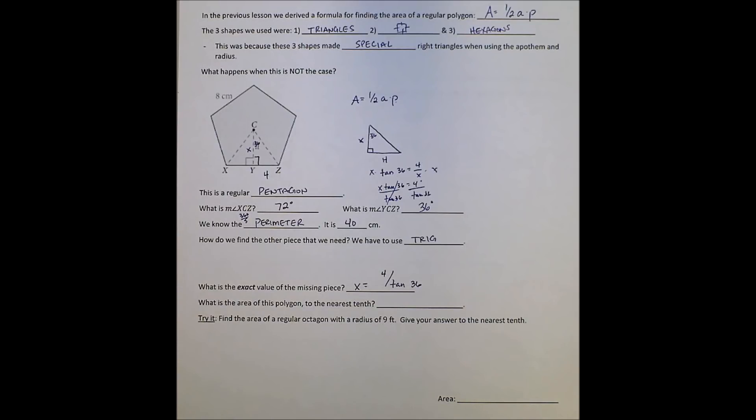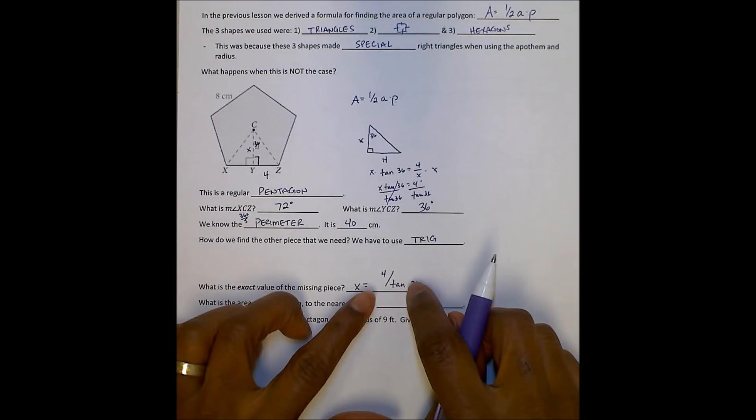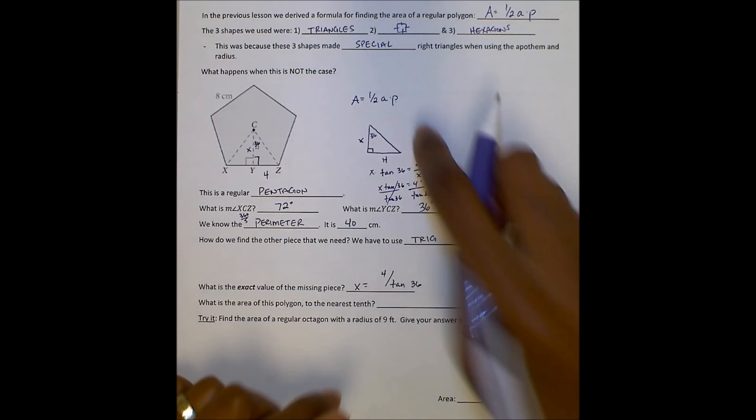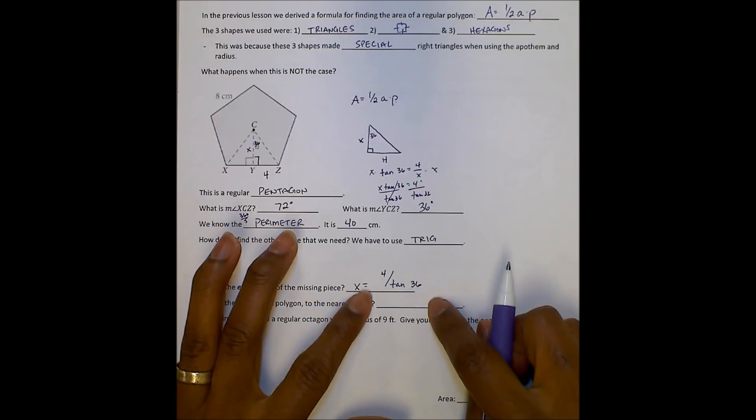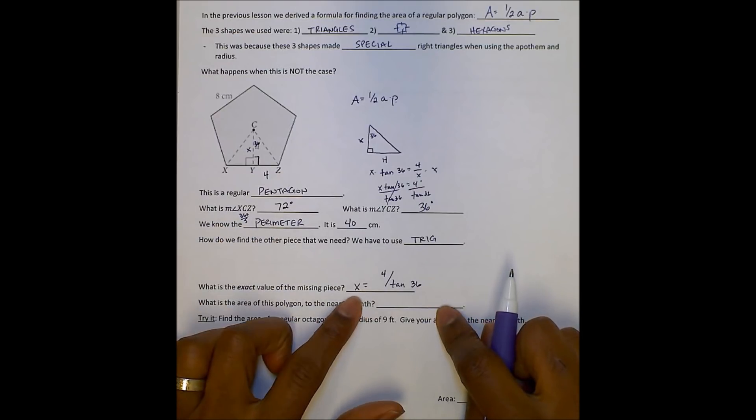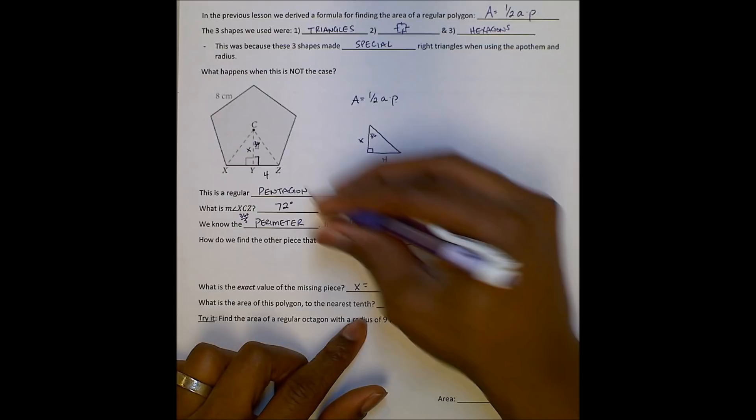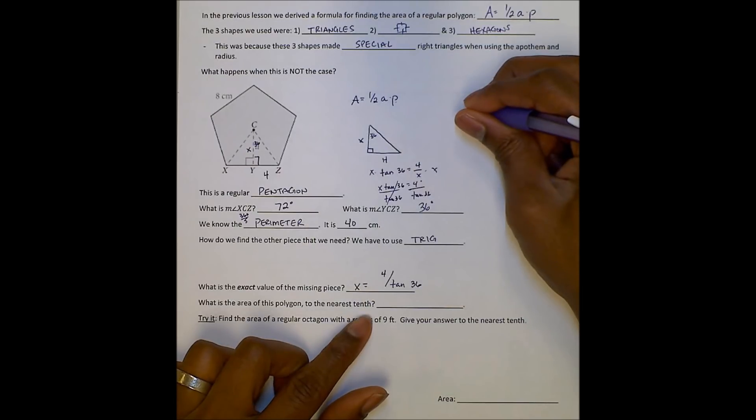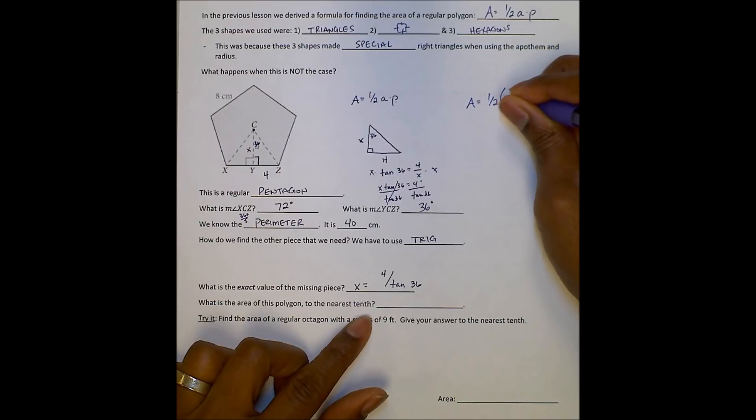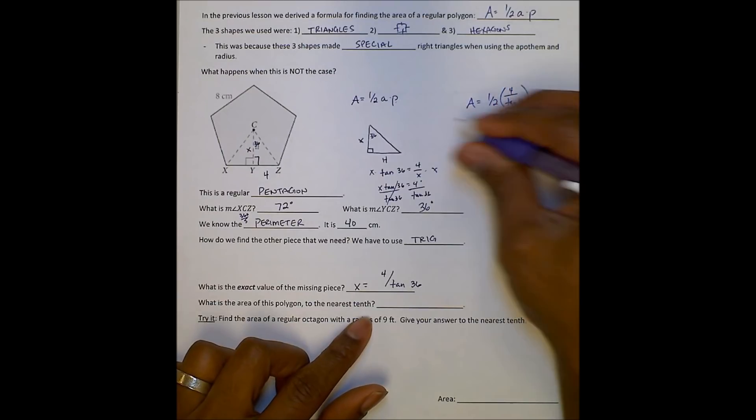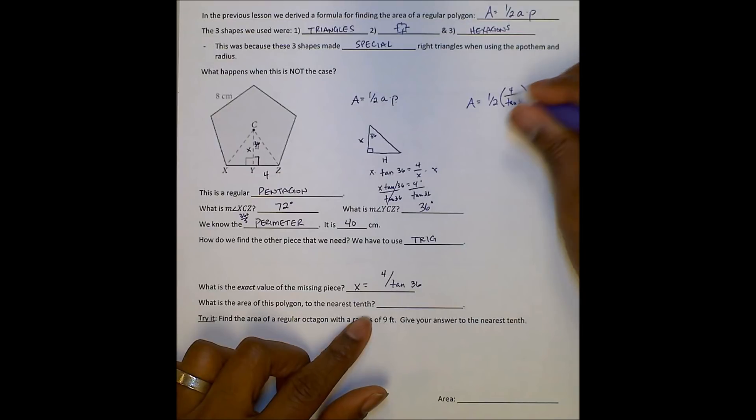So now I can use that. And I will use my exact value in my formula. So therefore, I don't mess up and round early and affect what my final answer is. So I can find the area of this pentagon by doing 1 half the apothem, which will be 4 over tangent 36. And you can use that, remember, in your calculator. I'll show you in your calculator how to do that. Times the perimeter, which we said was 40.